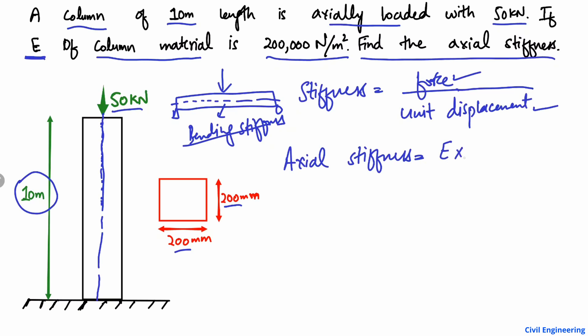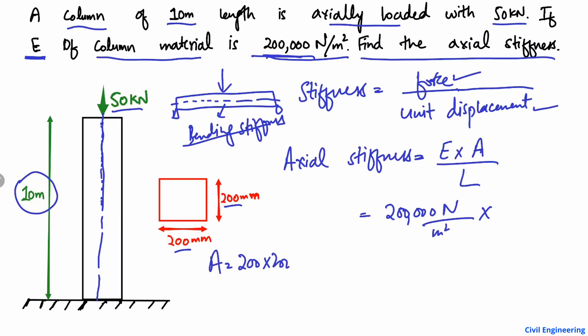The axial stiffness can be found using the formula: E × A divided by L, where E is the elasticity of the material, A is the area of the cross section, and L is the length of the member. E is given as 200,000 newton per square millimeter. The area of this column is 200 × 200.